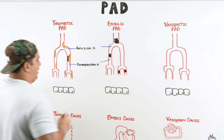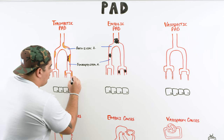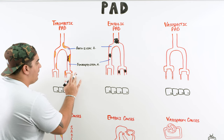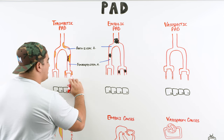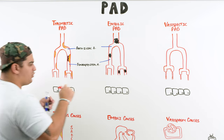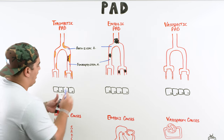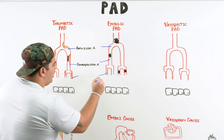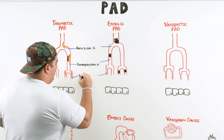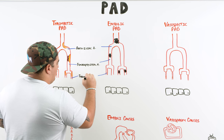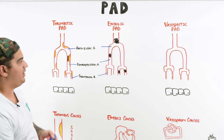The last set of commonly affected vessels are the tibiofibular vessels. These can also be hit by vasospastic disease, because vasospastic disease typically hits the farthest distal vessels — usually those going to the foot and around the ankle region. So these are the three main arterial territories affected in peripheral arterial disease.